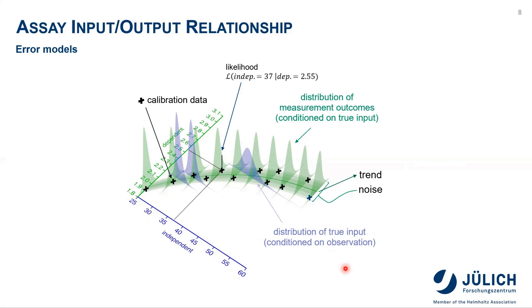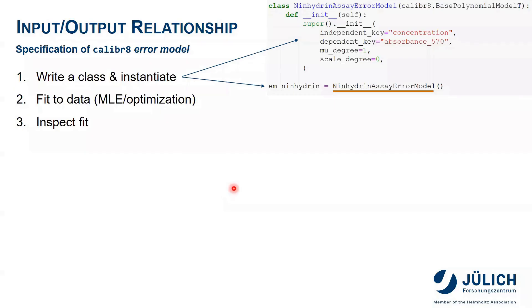In the following, we will show you how you can easily do this using our Python package. Let's take a look at a concrete example. In most cases, error models do not have to be implemented from scratch. Instead, they can inherit from one of the base models from Calibrate. In this case, we are inheriting from a base class that has this suffix T. This stands for student T-distribution, describing the noise. We found that in practice, this does not only account for outliers, but is also more numerically stable and easier to work with in optimization and sampling. To implement the error model for the ninhydrin assay in our application example, we inherit from the base polynomial model T, so we can model the trend as a first-order polynomial and the noise as a constant.